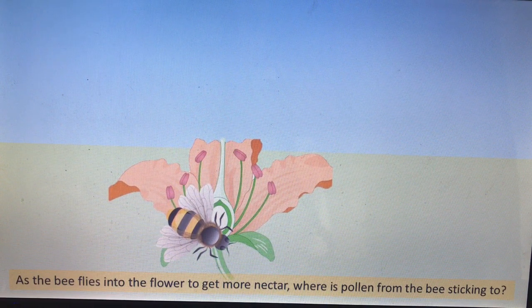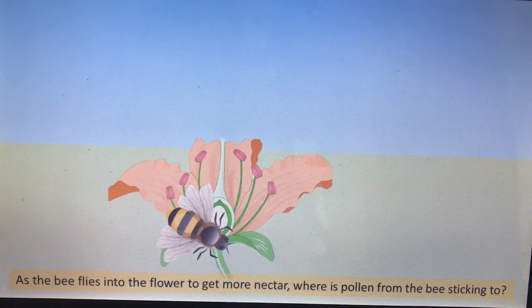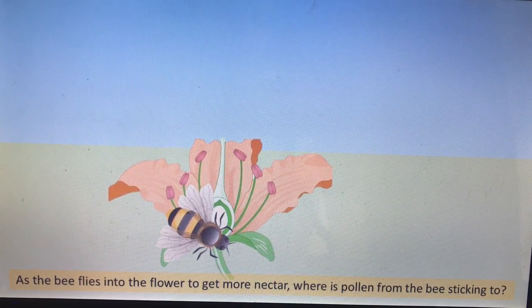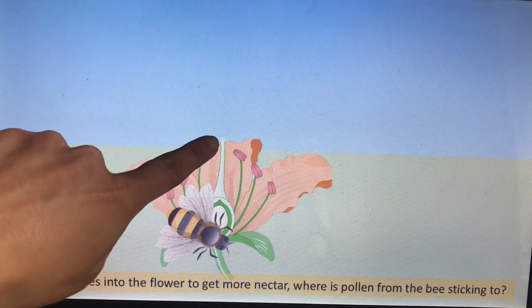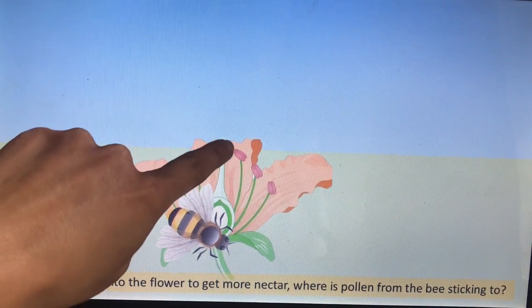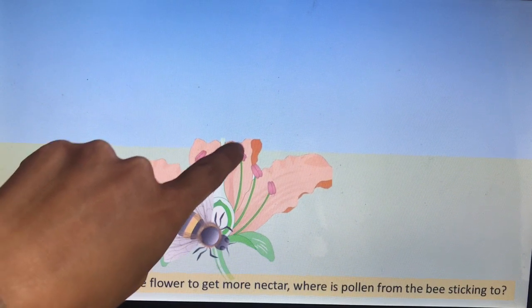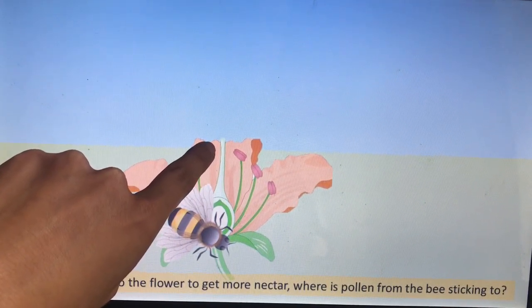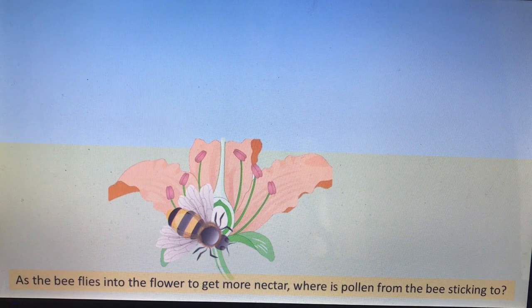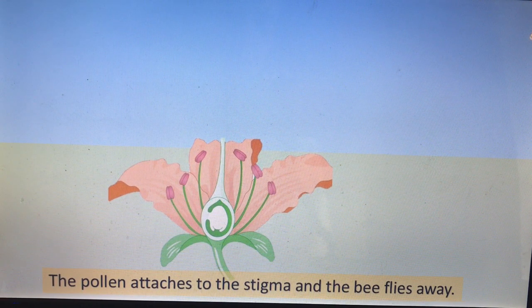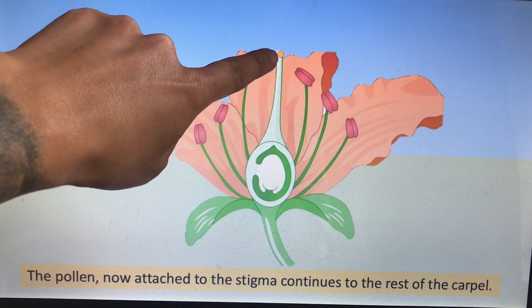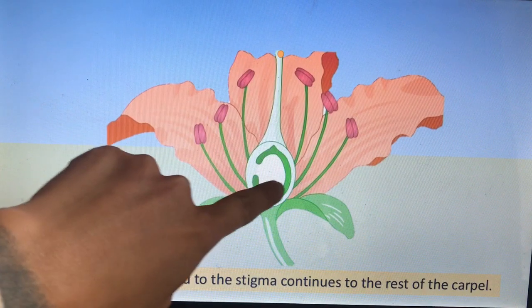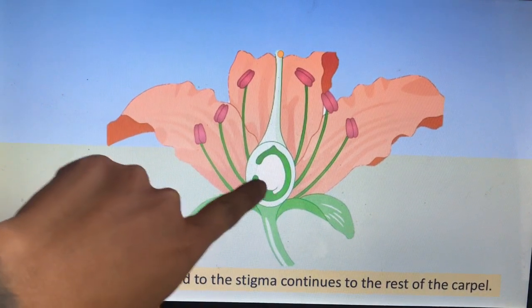Once it's collected as much nectar as it can, it will fly off to find another flower. Once it finds another flower it goes back to collect nectar from that flower too. However, it will still have pollen stuck to it from the last flower. That pollen may then get stuck to the stigma — which remember is at the end of the style — of this new flower.